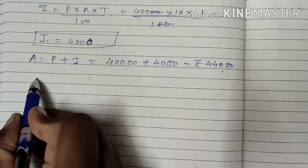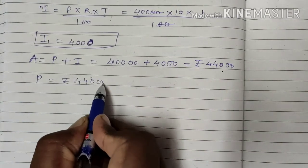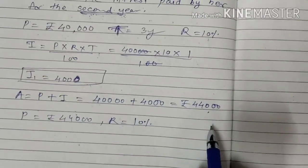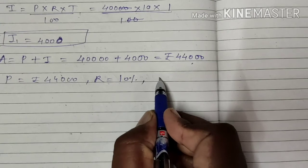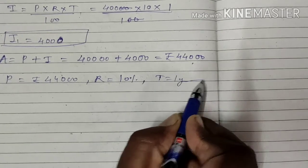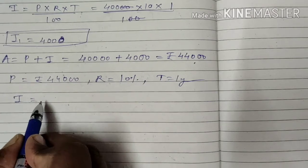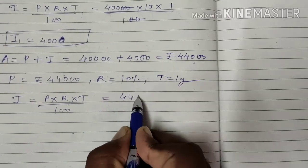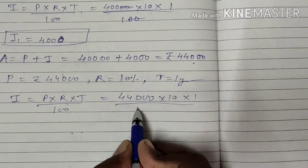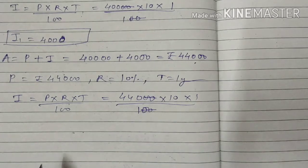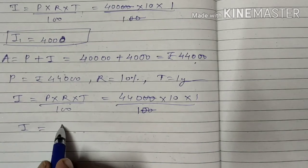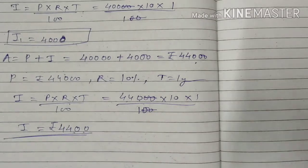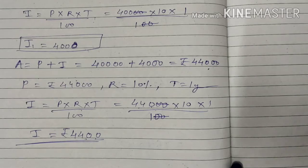This amount Rs. 44,000 will become the principal for the 2nd year. Rate of interest is 10% and time is 1 year. Interest 2 = PRT upon 100: 44,000 multiplied by 10 multiplied by 1 upon 100. Two zeros cancel. So the interest for the 2nd year will be Rs. 4,400.